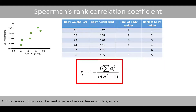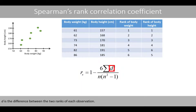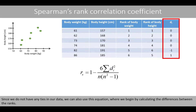Another simple formula can be used when we have no ties in our data, where d is the difference between the two ranks of each observation. Since we do not have any ties in our data, we can also use this equation, where we begin by calculating the differences between the ranks.